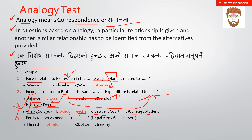Fourth example: pen is to poet, needle is to what? A pen is used by a poet. Similarly, a needle is used by a tailor — needle's profession involves thread, button, and sewing, so tailor is the right answer.